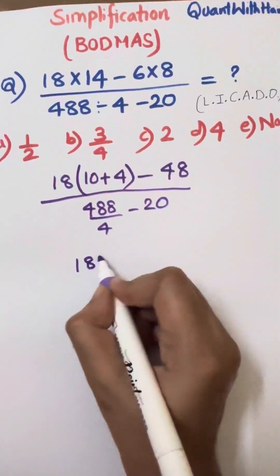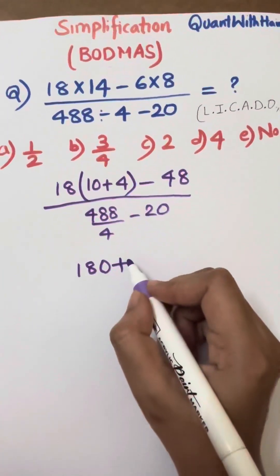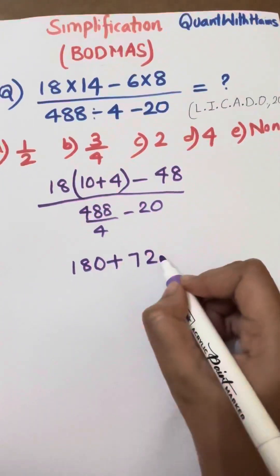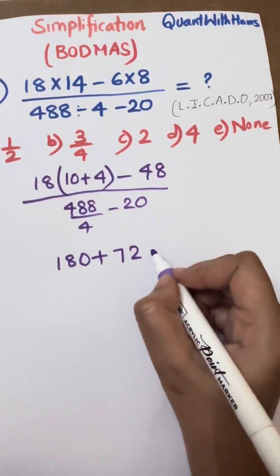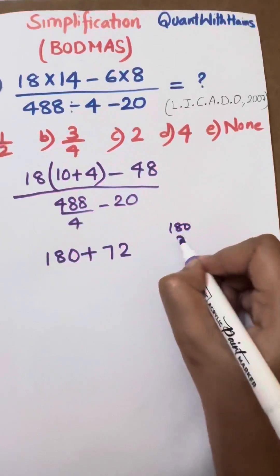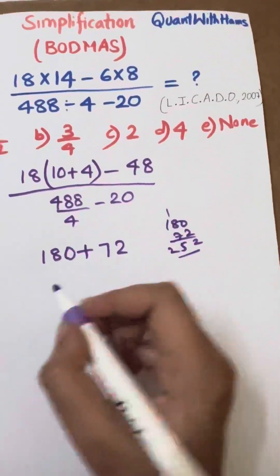Here, 18 times 10 is 180, plus 18 times 4 is 72. 180 plus 72 is 252.